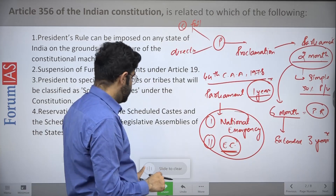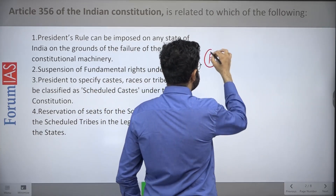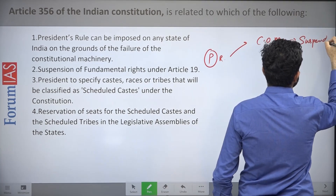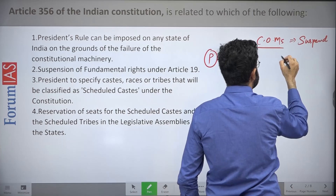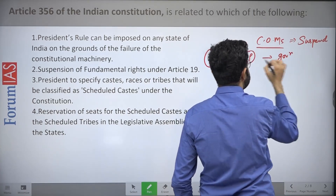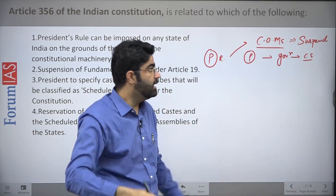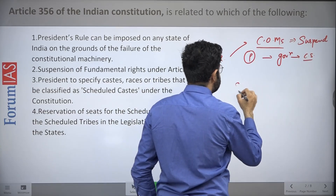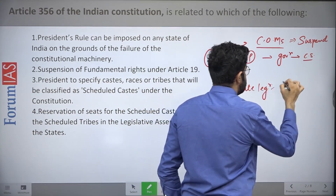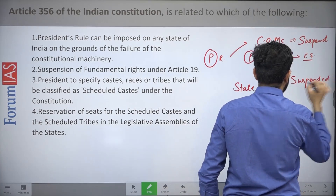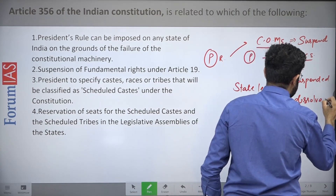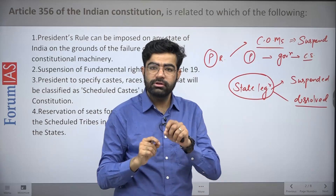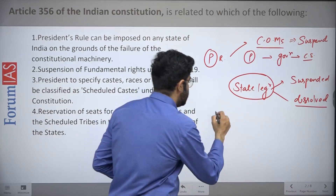When President's Rule is imposed, the state's Council of Ministers is suspended or removed. After that, the entire control of the state runs through the Governor on behalf of the President, and through Cabinet Secretaries. That is why this situation is known as President's Rule. The state legislature can be suspended or dissolved depending on the circumstances.